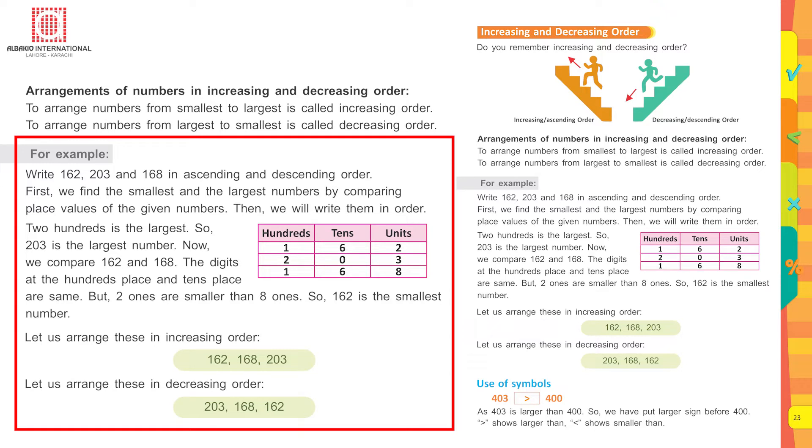Let's arrange these in increasing order: 162 is the smallest, next 168, then 203. Now let's arrange these in decreasing order: 203 is the largest number, then comes 168, then 162.